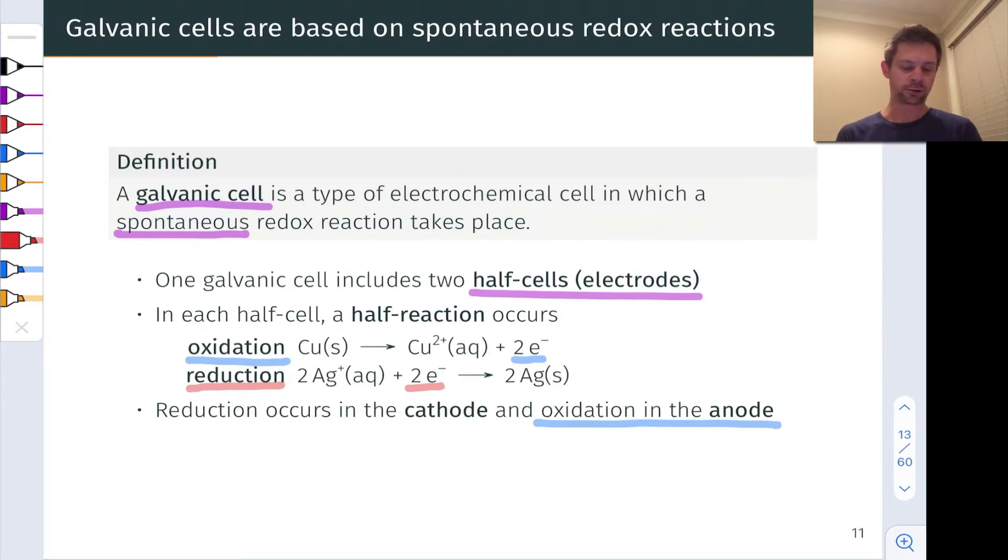Reduction occurs in the cathode. So here again, if we think about a copper-silver galvanic cell, reduction would occur in the silver half cell, and that would be the cathode. These terms cathode and anode are also related to other types of ionic movements in the galvanic cell, as we'll see on the next slide.